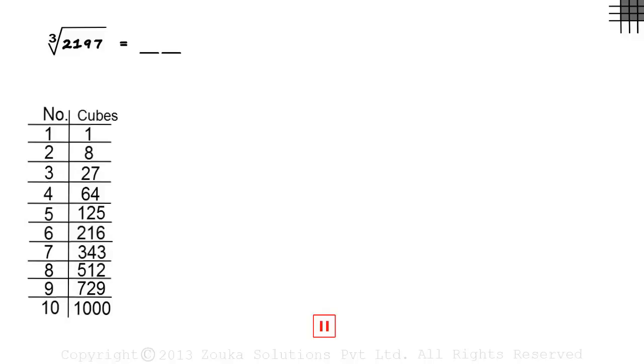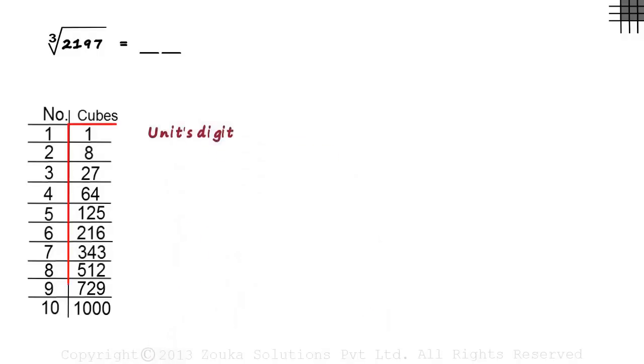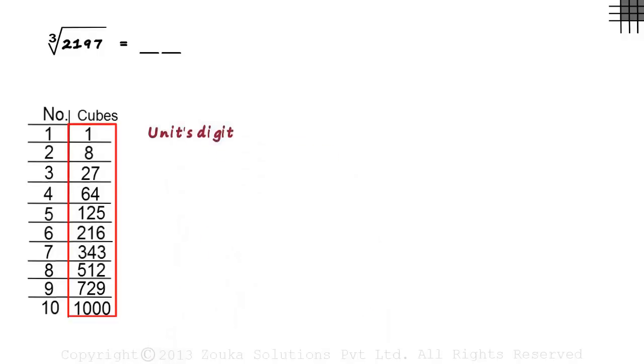This is what you should have observed. Look at all the units digits of the numbers in the cubes column. They are all different from each other. All numbers from 0 to 9 are covered.